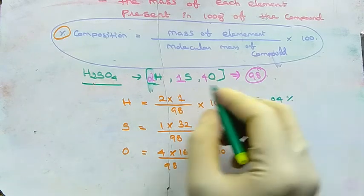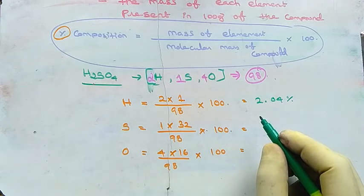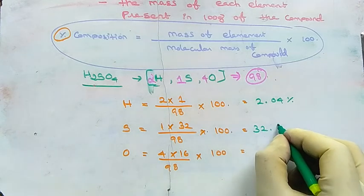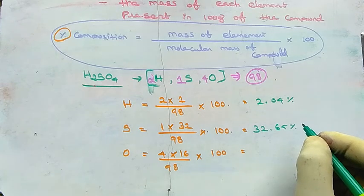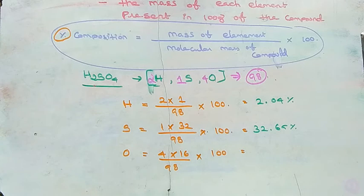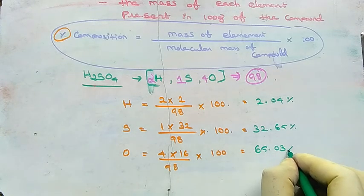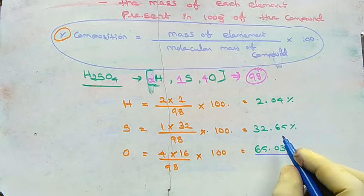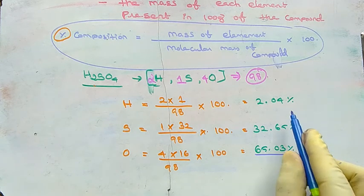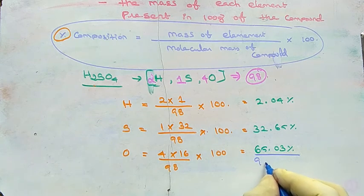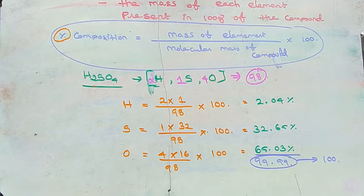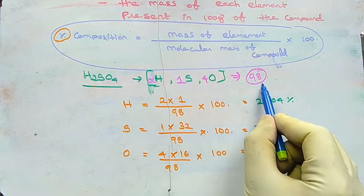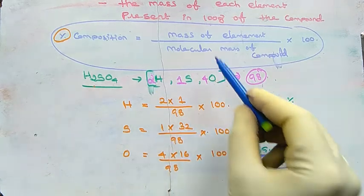By calculating: hydrogen is 2.04%, sulfur is 32.65%, and oxygen is 65.03% in H2SO4. To verify, we add all three values: 2.04 + 32.65 + 65.03 = 99.99, which is almost equal to 100, confirming we have done it correctly. This is how we find the percentage composition of each element in any compound. Thank you for watching, we'll see you in the next video.